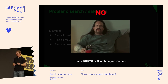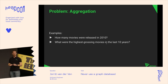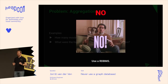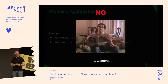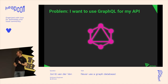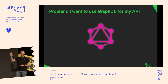If your problem is aggregation — find all movies released in a certain year, or what were the highest-grossing movies in the last 10 years — again the answer is no. A relational database is really good at filtering and aggregating, so please don't use a graph database for that. Here's a fun one: I had a colleague who asked, "I want to use a graph database because I want to implement an API with GraphQL — is that a good idea?" What do you all think? Raise your hands if you think this is a good idea.